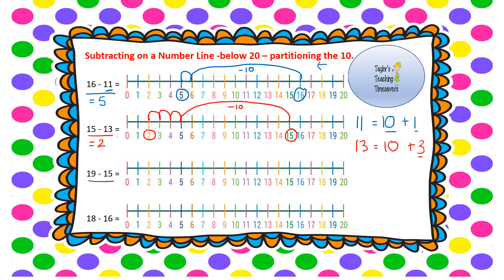Next: 19 take away 15. Find 19 on the number line. Partition 15 into a 10 and a 5. Jump back 10 spaces first: 19 take away 10 takes me to 9. Now jump back 5 more spaces: 1, 2, 3, 4, 5. I've landed on 4, so 19 take away 15 equals 4.